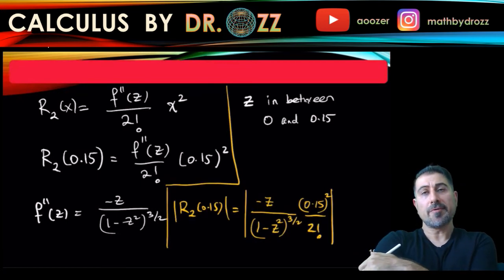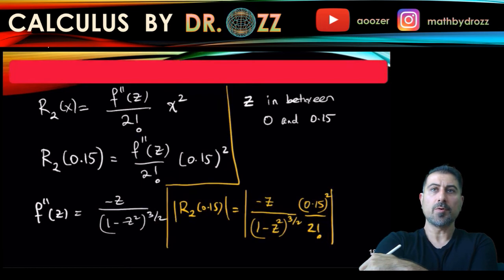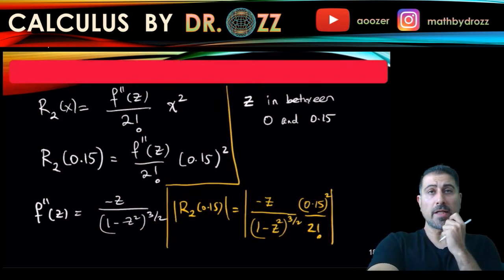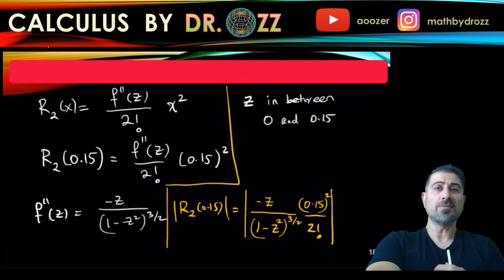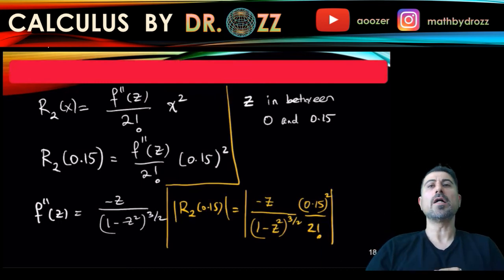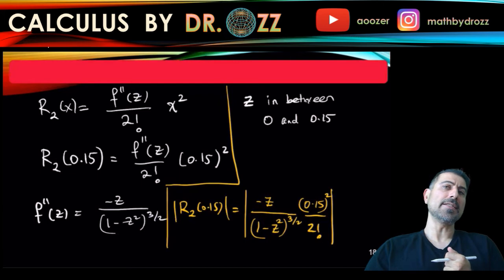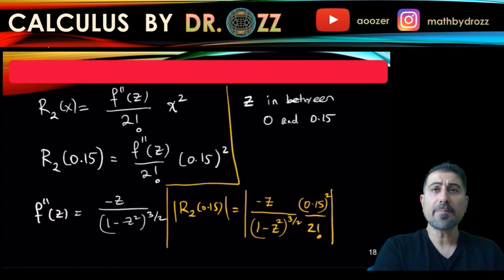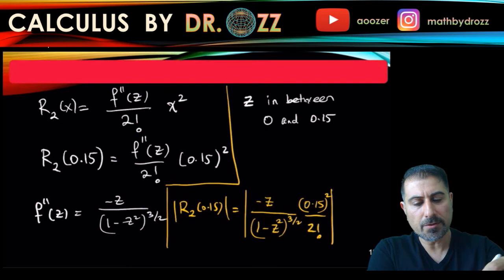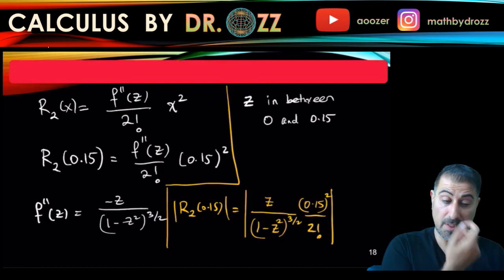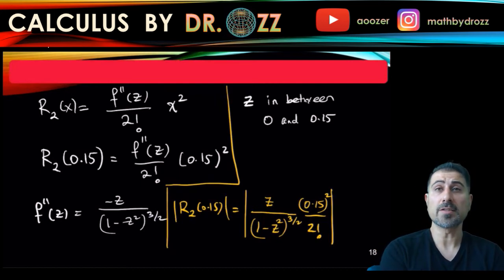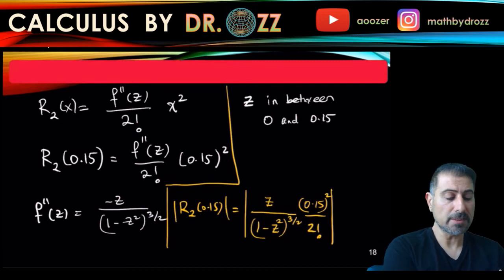Alright. At this moment, by the way, I took the absolute value of R_2 at 0.15 because I need to find an upper bound. I'm going to try to majorize this quantity. I don't know exactly what z is, except that I know it's in between 0 and 0.15. But I'm going to try to maximize this quantity by taking the absolute value. So I'll see the maximum error. So at this moment, think about what kind of z makes this expression bigger. But first of all, since this is an absolute value, I'm going to get rid of all the minuses here. Z is a positive number anyway. When you take the absolute value, that's going to be positive. So the whole expression is going to be positive.